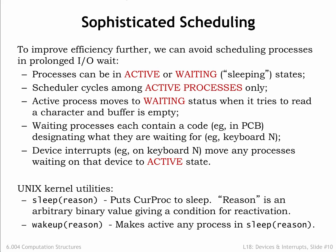We can actually go one step further to ensure we don't run processes waiting for an I/O event that hasn't yet happened. We'll add a status field to the process state indicating whether the process is active, e.g. status is 0, or waiting, e.g. status is non-zero. We'll use different non-zero values to indicate what event the process is waiting for. Then we'll change the scheduler to only run active processes.